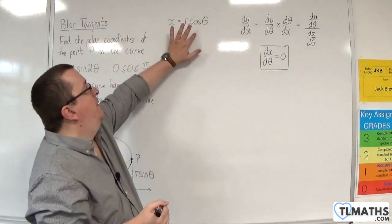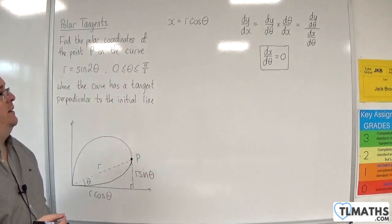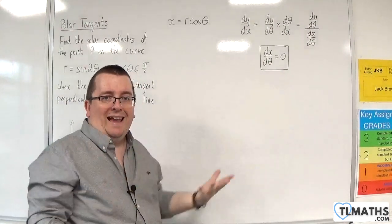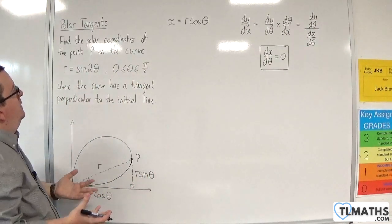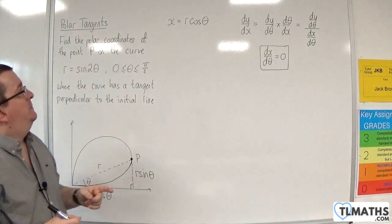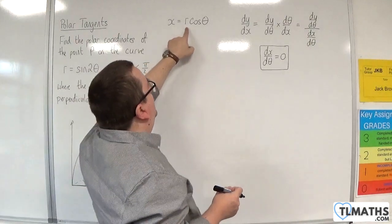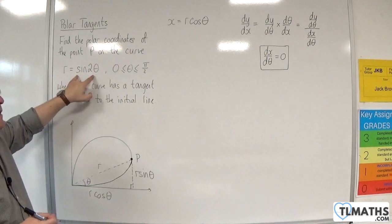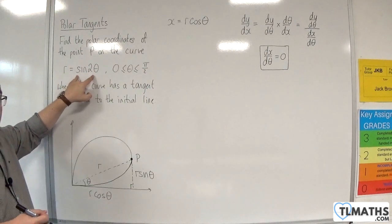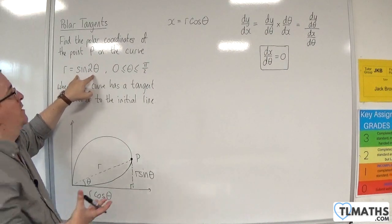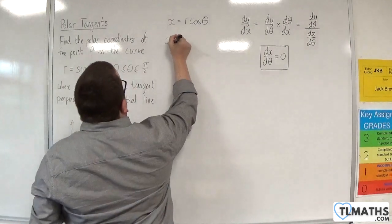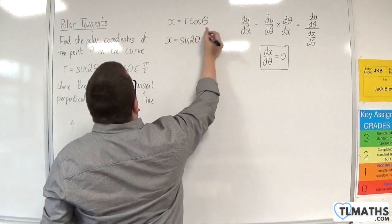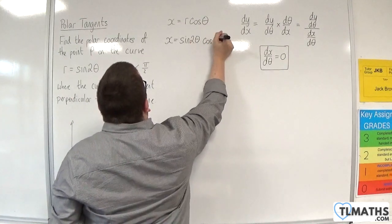That's why we've written X equals R cosθ — because we need to differentiate it to find dx/dθ. Before we do that, we still have X in terms of R, so we swap out R with sine 2θ for the curve we're considering. So we can write X as sine 2θ (that's the R) times cosθ.